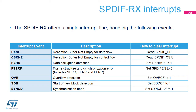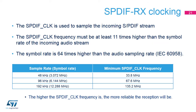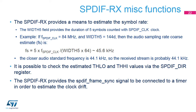The SPDIF-RX offers a single interrupt line shared by several events. In order to have reliable decoding of the SPDIF stream, the SPDIF-CLK frequency must be at least 11 times higher than the symbol rate. The table gives the minimum requested frequency for the SPDIF-CLK clock according to the sample rate of the SPDIF stream. The SPDIF-RX provides information allowing the application to estimate the sampling rate of the decoded stream without having to decode the CS channel. The accuracy of the sampling rate estimation is partly limited by the SPDIF-CLK frequency. The application can also check the estimated TH low and TH high thresholds for debugging purposes.